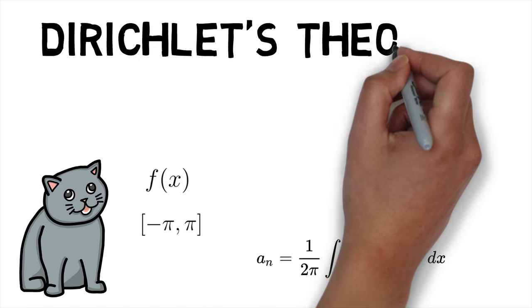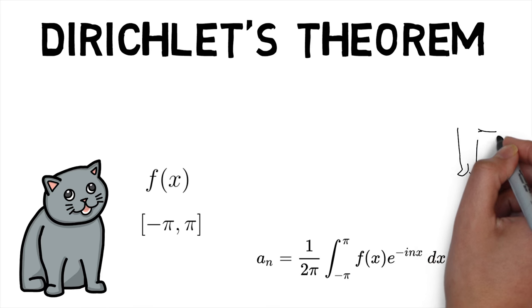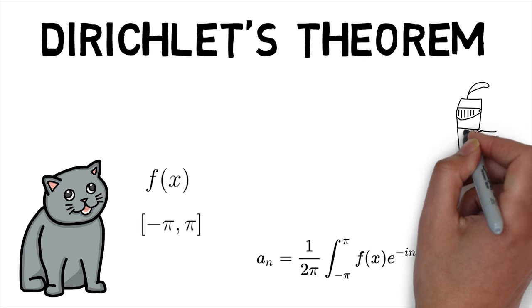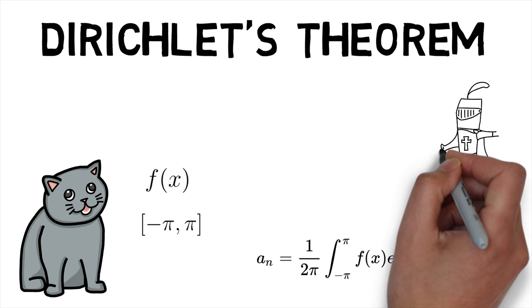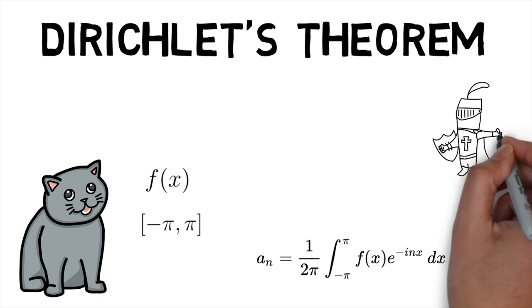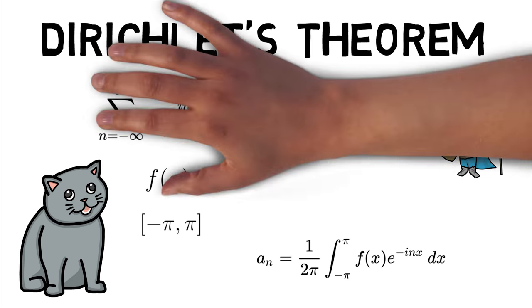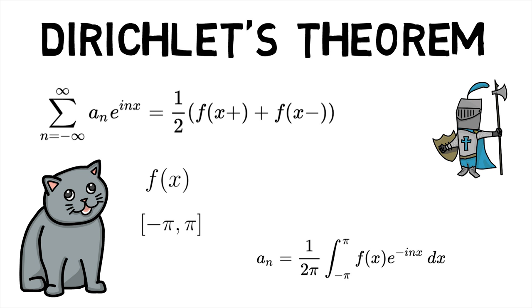Dirichlet's theorem states that if f satisfies Dirichlet's conditions, then for all x, the series obtained by plugging x into Fourier series is convergent, and is given by summation of a_n times e^(inx) from n equals minus infinity to infinity, which equals half the sum of f(x+) and f(x-).